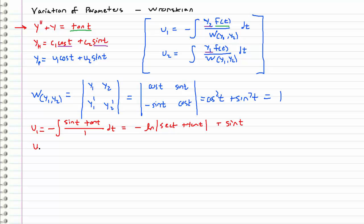And then u2, which equals the integral of y1, which is cosine t, times f(t), which is tangent t, all over 1 dt. The cosine cancels with the cosine in tangent, leaving just sine of t, which integrates to negative cosine t.